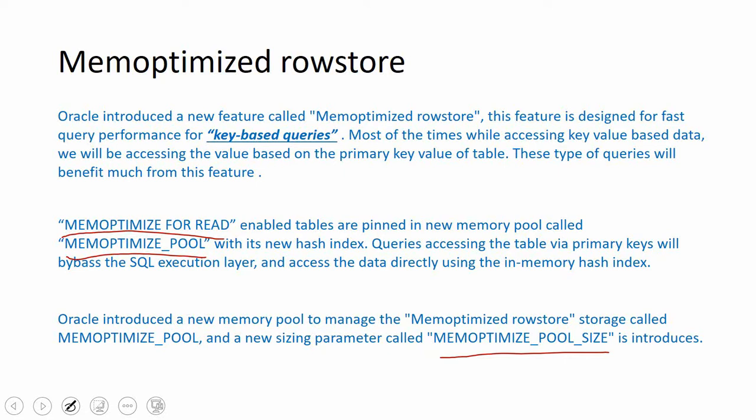Let us understand this through an example. First, I'll create and show the default behavior in an Oracle 12c environment. Then we'll create a table with mem-optimized for read enabled in Oracle 18c. Then we'll see the difference in the execution plan so we'll be able to understand how the data is being accessed in 12c versus 18c.